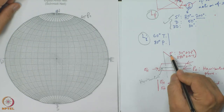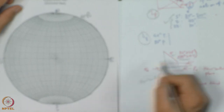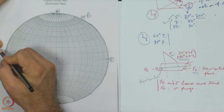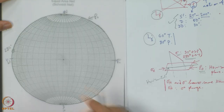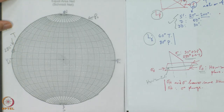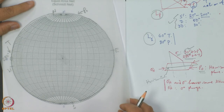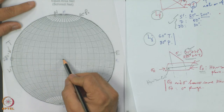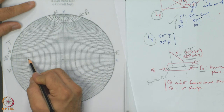Next, I have to plot the sigma stress which has a 30 degree plunge and 280 degree trend. To plot it first, I have to plot the 280 degree trend. North is 0, east is 90, south is 180, west is 270, and then plus 10 is 280 degrees which is the trend. Next, I rotate the tracing sheet so that 280 comes to the west in the stereonet, then move 30 degrees inside towards the centre and mark the point.